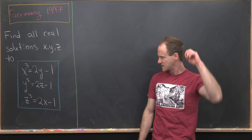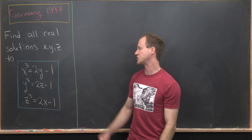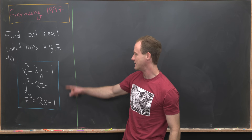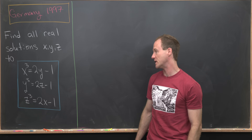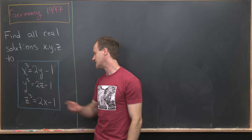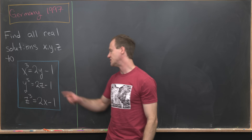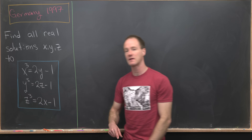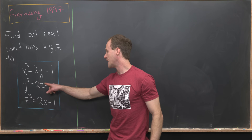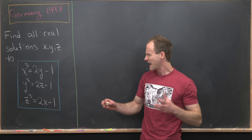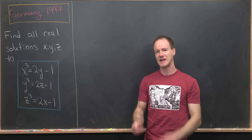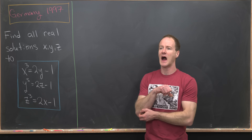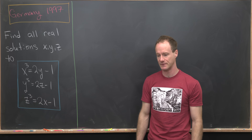Looking at this, I think there's a big hint built into the structure of this system of equations, and that is this cyclic symmetry. Notice as we move from x to y to z on the left-hand side, we have x, y, z on the right-hand side just in a different order. So this offset cyclic symmetry really tells me that probably our solution is a very symmetric type of solution.